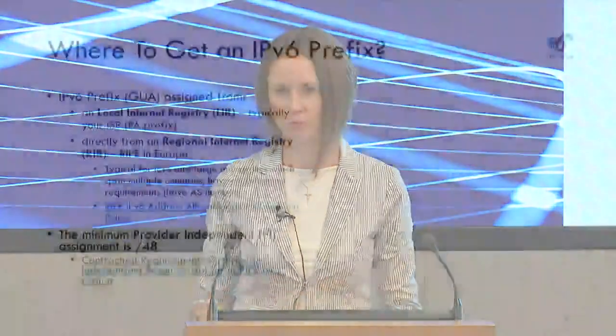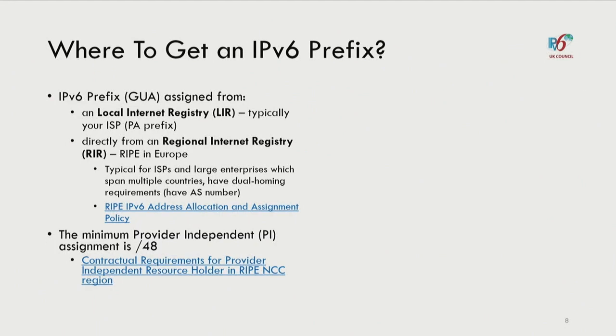Where do you go to get an IPv6 prefix? You're getting a global unicast address. You can go to your local internet registry — your upstream provider — and get a provider-assigned prefix, though not everyone likes that because if you change ISPs you'd have to re-address. Alternatively, you can go directly to RIPE, either sponsored by your LIR or by becoming an LIR yourself. This is typical for ISPs, cloud service providers, and large enterprises spanning multiple countries.